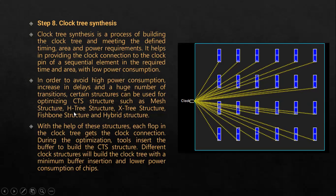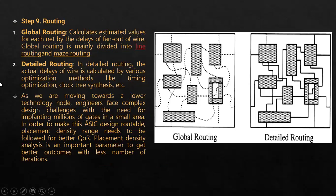There are several structures such as H-tree structure, X-tree structure, and fishbone structure. These are high-level advanced structures used by engineers for ensuring that the clock reaches to each and every flip-flop at the same time. After placement, the clock tree synthesis is done, then it is sent for routing.